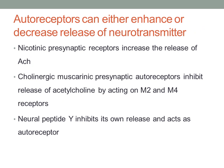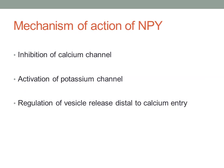Autoreceptors can either increase or decrease the release of neurotransmitter. For example, nicotinic presynaptic receptors, when activated by acetylcholine, will facilitate a further increase of acetylcholine. However, the cholinergic muscarinic presynaptic receptors will inhibit the release of acetylcholine by acting on M2 and M4 autoreceptors, and neuropeptide Y inhibits its own release and also acts as an autoreceptor.